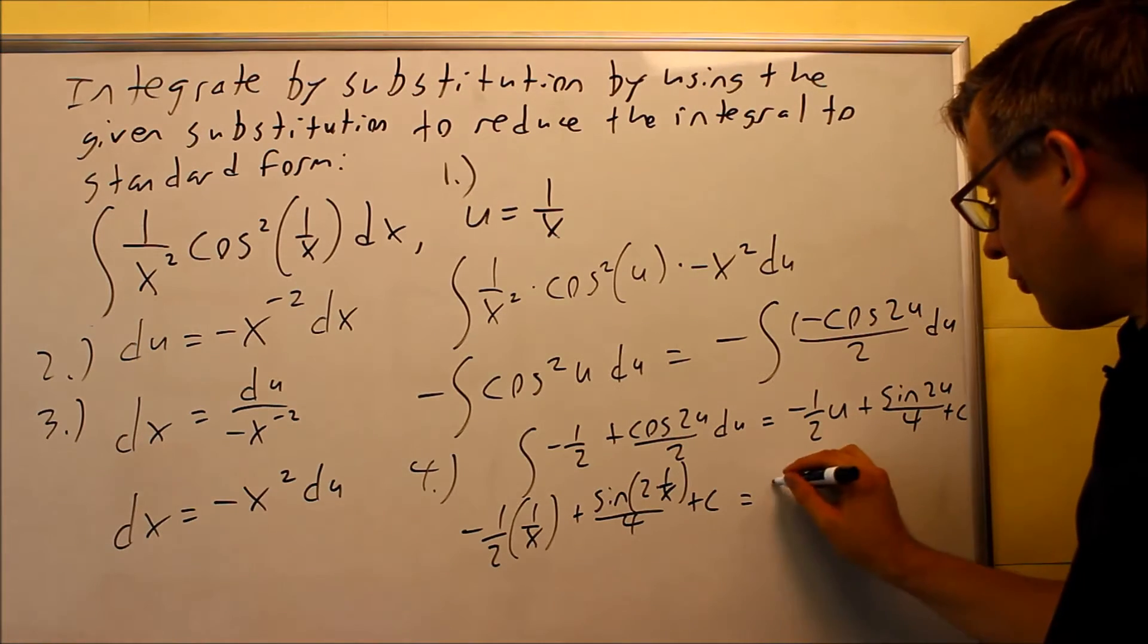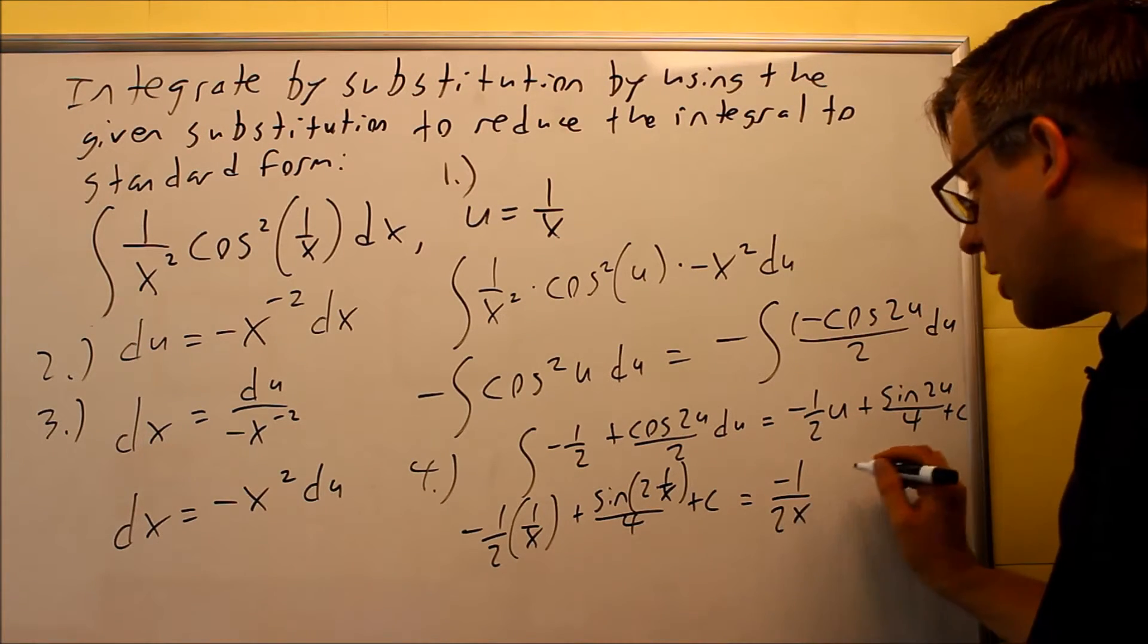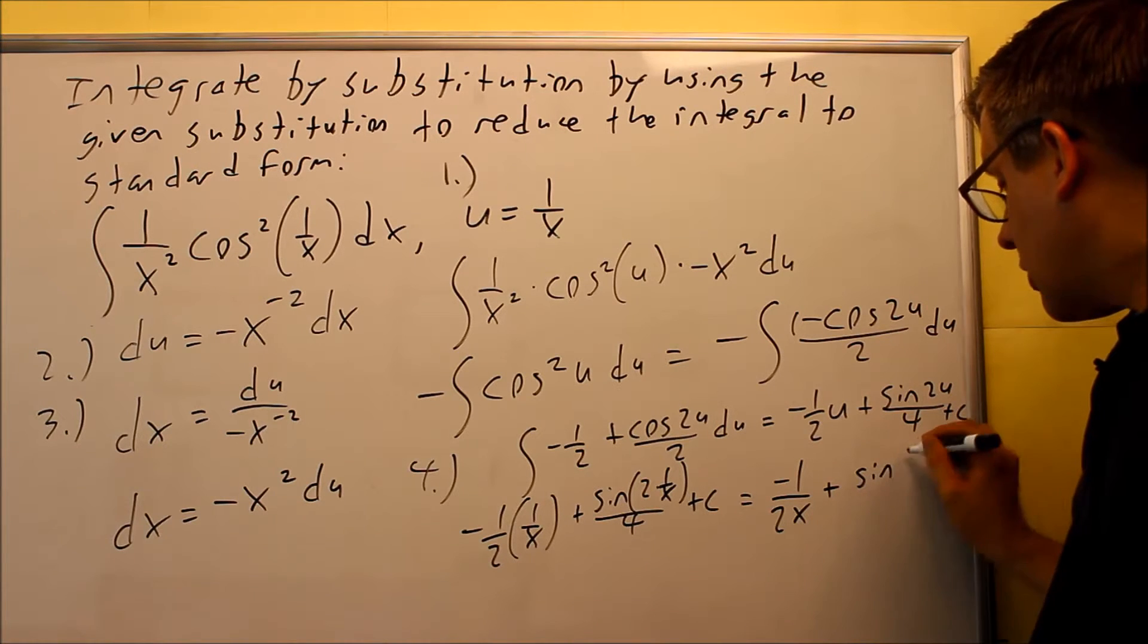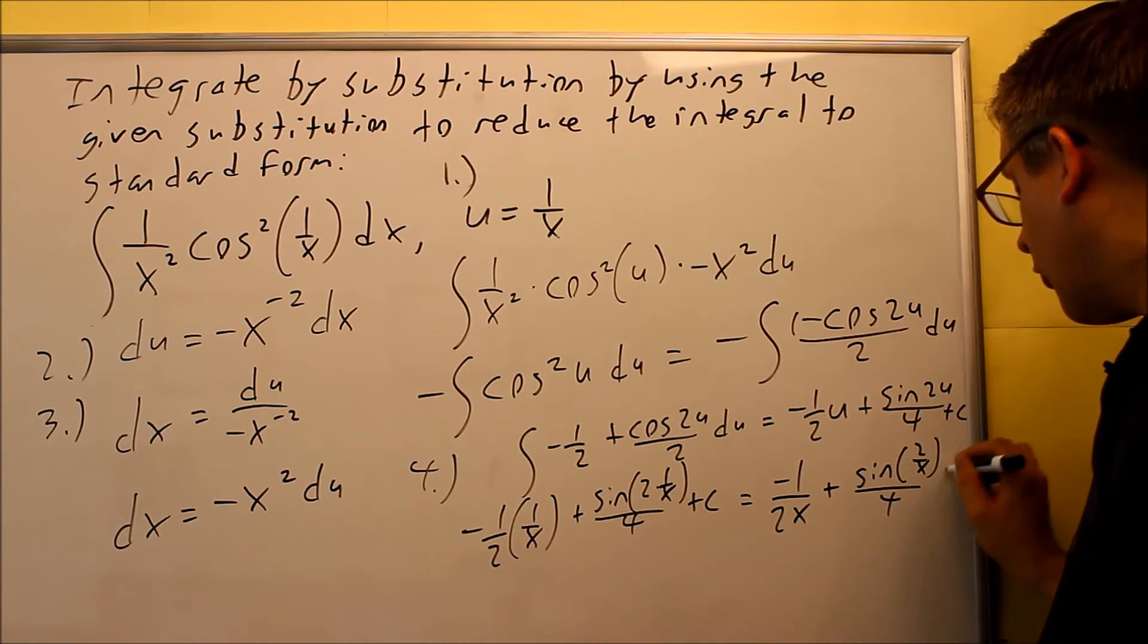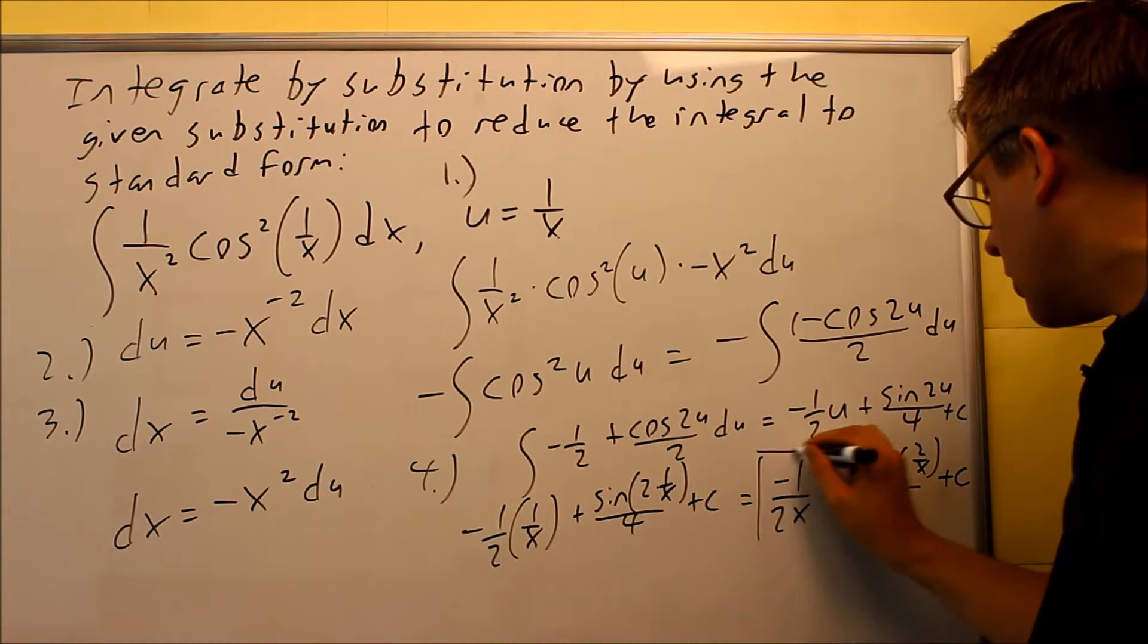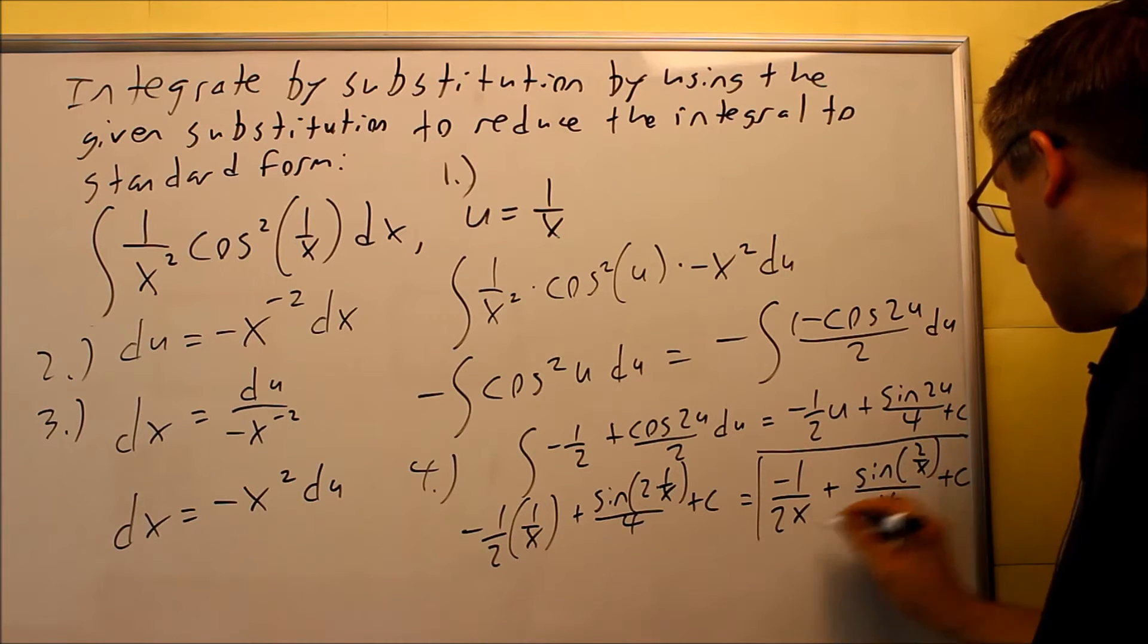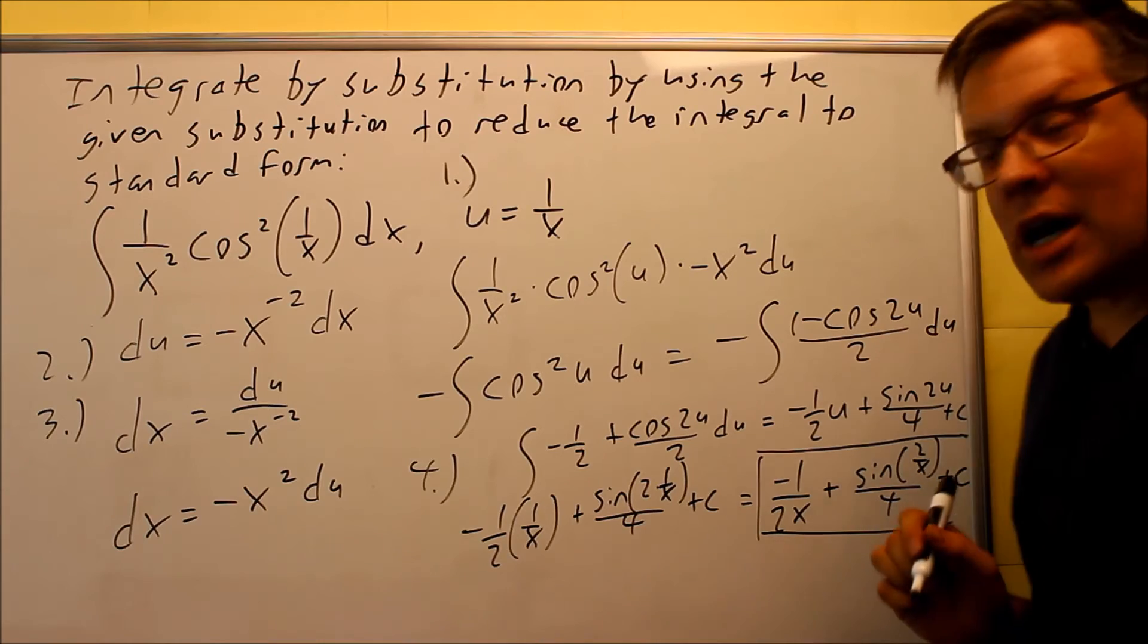And if you'd like to simplify that down even further, you can do negative 1 over 2x plus sine of 2 over x, and that's all going to be over 4 plus c. So this right here is going to be your final answer, the one that's inside the box.